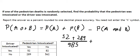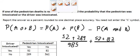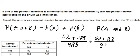For P(B), that's the driver: 52 plus 82, divided by 985. Then minus P(A and B), which is just 52.